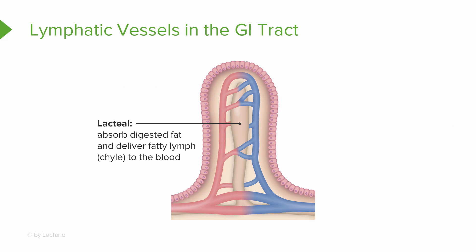Also, in our GI tract, in the digestive system, we have specialized lymph capillaries called lacteals. These lymph capillaries are going to absorb digested fats and deliver fatty lymph, or chyle, to the blood.